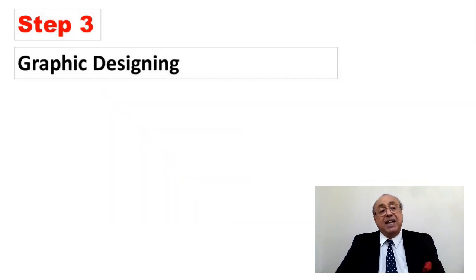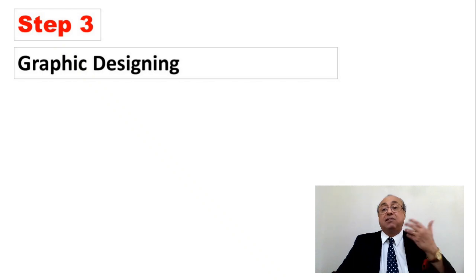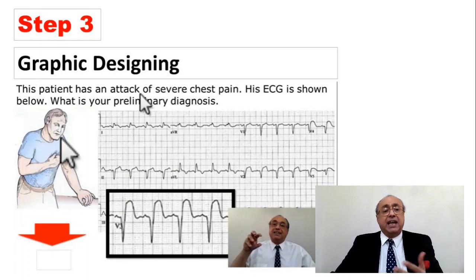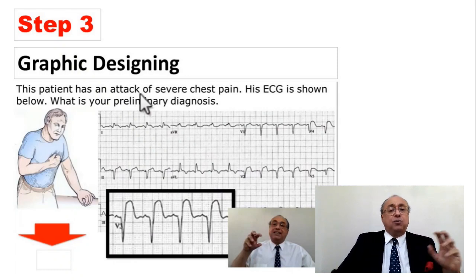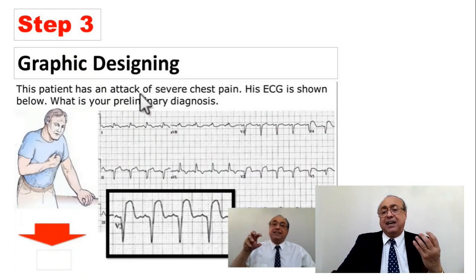The third step I use is graphic design. After the selection of information and educational design, I go to graphic design in step three. By this I mean what type of illustrations am I going to use — a man or a woman, an old man, an ECG, X-ray, what type of arrows. Is it going to be red with a certain theme for endocrinology, blue for nephrology, or green for rheumatology? You can design your graphic design based on certain color codes tied to a specific topic or medical discipline.